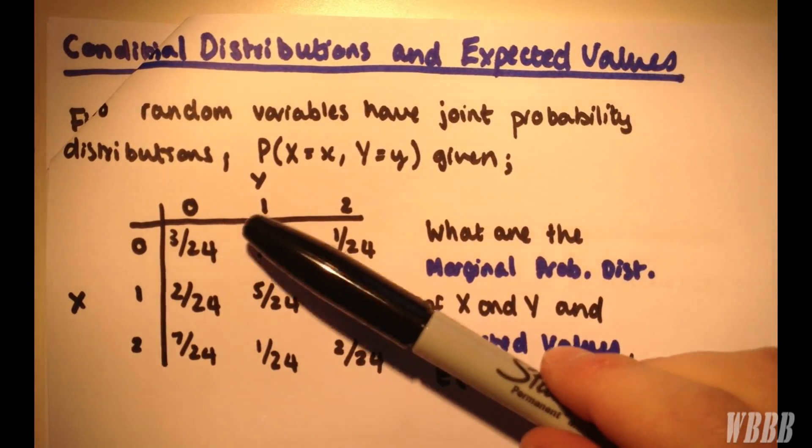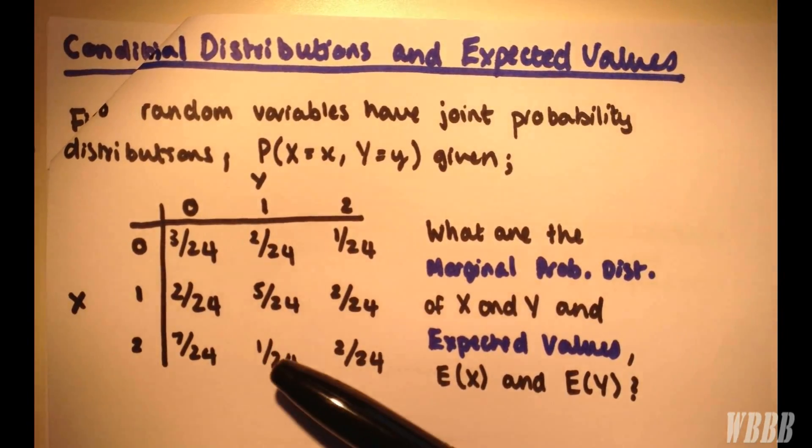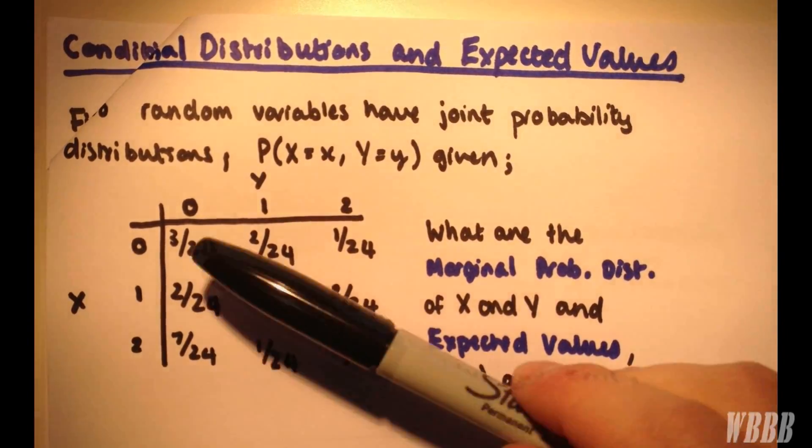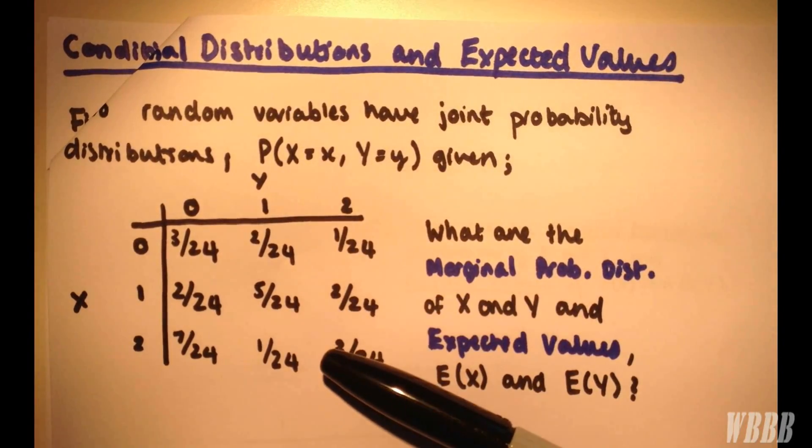automatically you want to write down 2 over 24, 5 over 24, and 1 over 24. But you've got to consider we're omitting these three values here and these three values here.